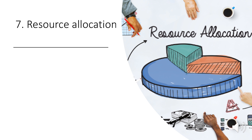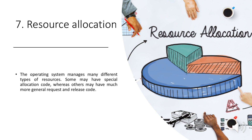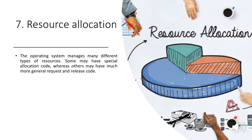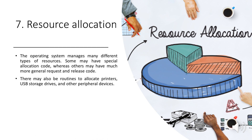Resource allocation: When there are multiple users or multiple jobs running at the same time, resources must be allocated to each of them. The operating system manages many different types of resources. Some may have special allocation code whereas others may have more general request and release code. There may also be routines to allocate printers, USB storage drives, and other peripheral devices.